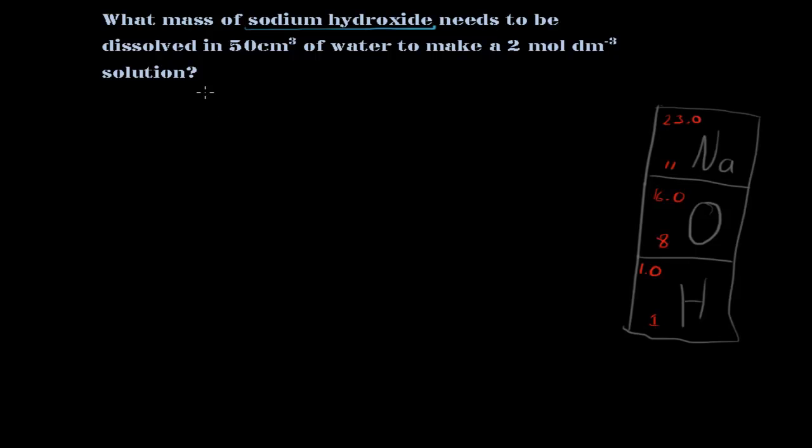Okay, the first thing I'm going to do here is identify what things I've been given. First of all, what mass of sodium hydroxide? I know that the formula of sodium hydroxide is NaOH and I have a periodic table, so I can use this to work out the molar mass. So from this the molar mass is going to be 23 plus 16 plus 1. I could probably work that out in my head, but anyway, this gives me a molar mass of 40 grams per mole.